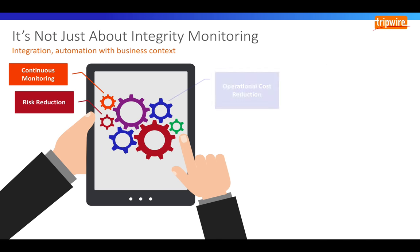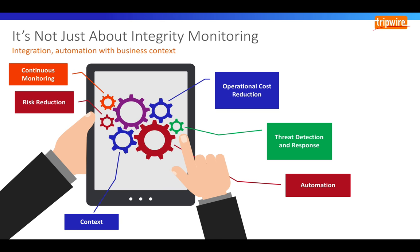We've covered off a number of areas where we can monitor for changes, such as file systems, databases, Active Directory, virtual infrastructures, and network devices. But through automation and continuous monitoring, we can start to reduce risk and operational costs, and apply context and full visibility to what has changed within the environment. Through integrations with third parties such as service management and threat integration, we can home in on those unapproved and unauthorised changes and help detect zero-day attacks occurring in real time.